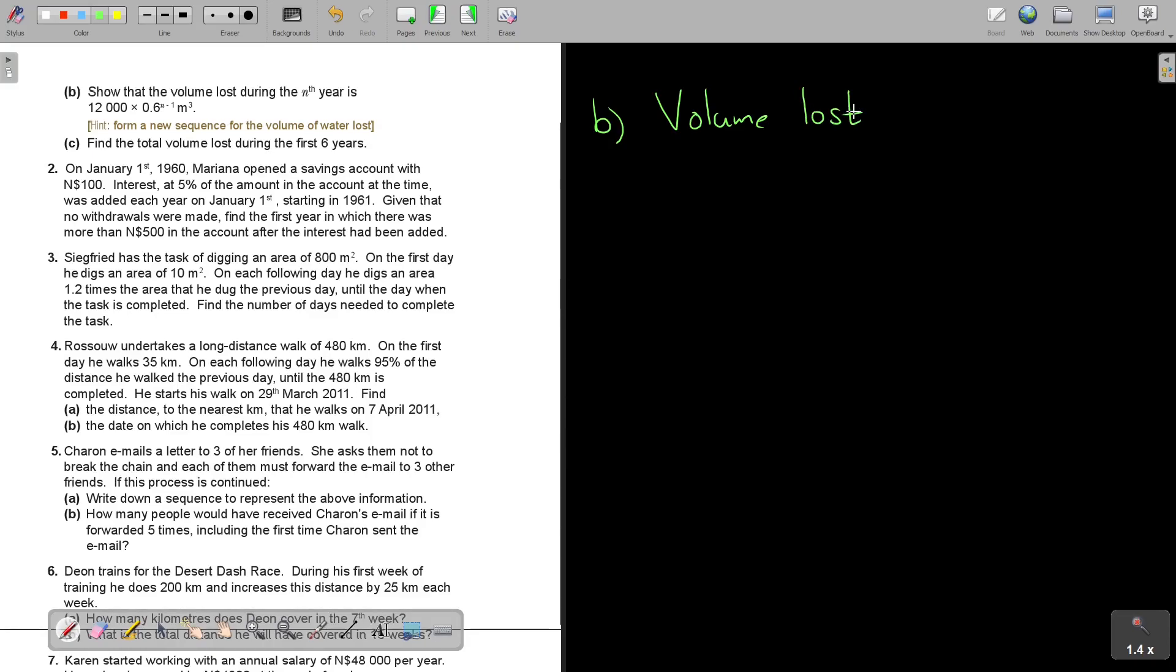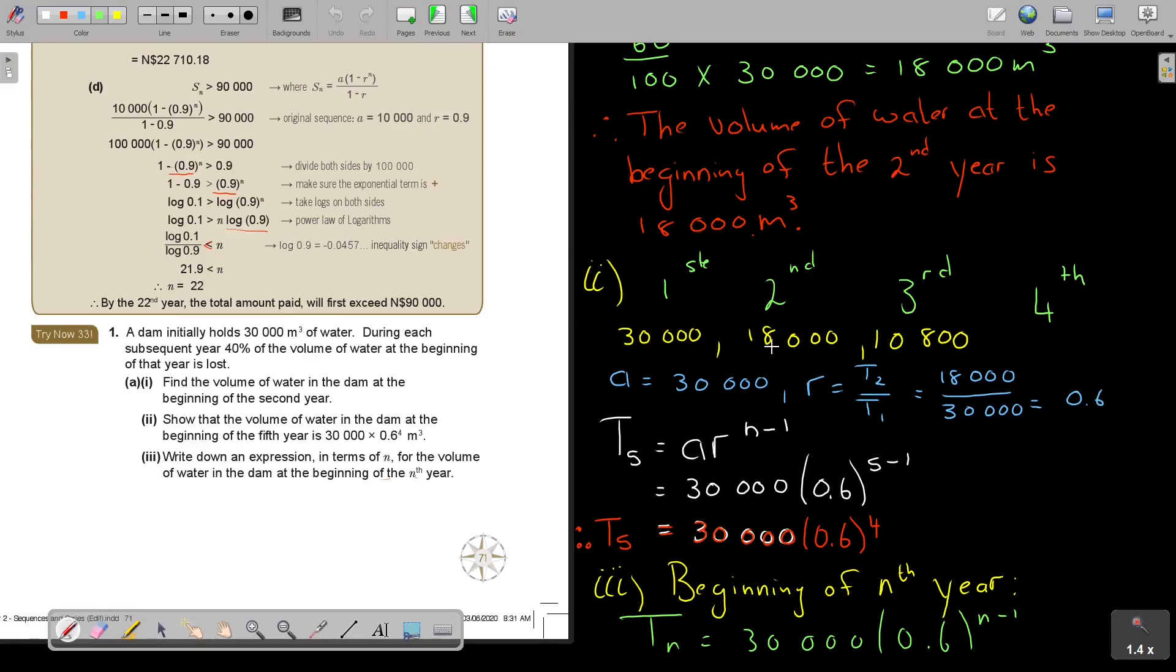So it will be TN is that 30,000 times 0.6 to the power N minus 1. That is for TN. Now we go to the next page. Now again I want you to stop the video. I didn't show you the next page so that was number A, so now what you can do is you can again stop the video and you can first try number B and C and as soon as you are done you can continue the video.